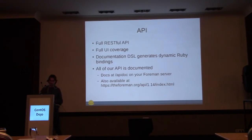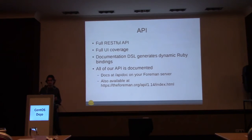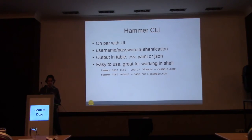The API is a RESTful API with full coverage of the UI - anything you can do in the UI but not in the API is a bug. There's a documentation DSL inside it that describes the API, and from that we can generate Ruby bindings. There are also unofficial Python bindings you can use. The documentation is provided on every server's API docs page and also on the website. There's also a command-line interface, and again, if you use the API it should be on par with the UI.